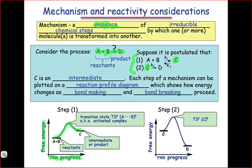In step two, intermediate C must come out of its well, and then fall down to the product D.